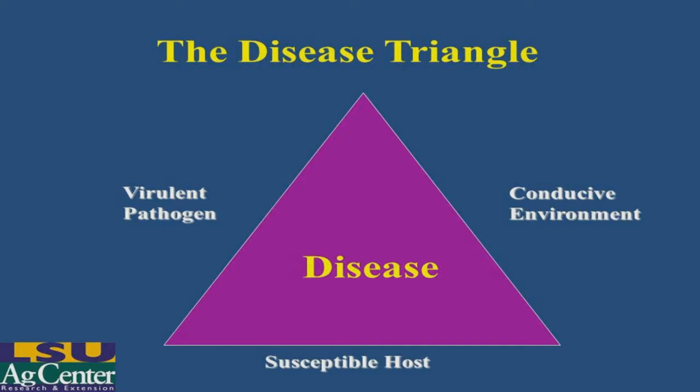And of course, we have to have a susceptible host — in other words, a plant that is capable of being diseased. And when all three of these components come together at the same time, we have plant disease.